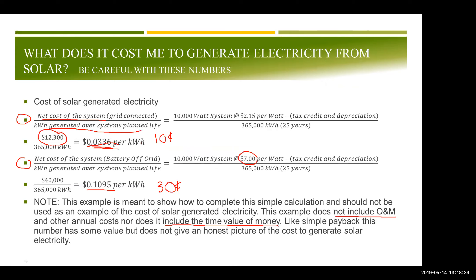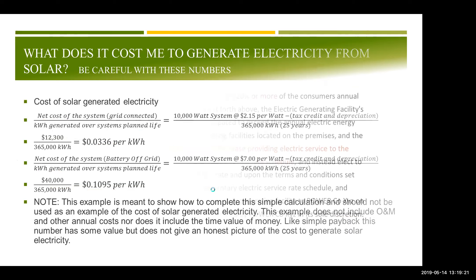It is important to consider the time value of money. The off-grid system could work depending on your motivations and what it costs to connect to the grid, but at 30 cents per kilowatt-hour that's fairly expensive electricity. You'd also need a fairly moderate home or business for a 10 kW system to work, and there's the question of whether you want to be your own utility and troubleshoot outages yourself.